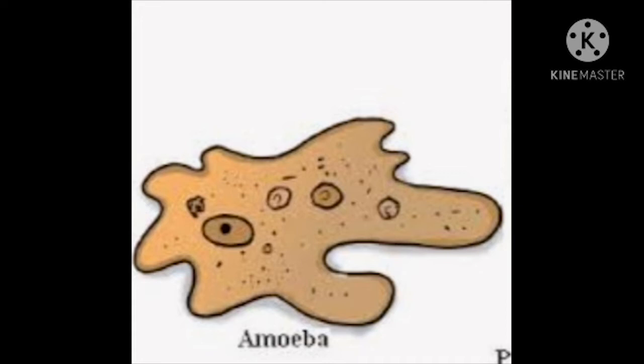How would you define the shape of amoeba? You may say the shape appears irregular. In fact, amoeba has no definite shape unlike other organisms — it keeps on changing its shape. Observe the projections of varying length protruding out of its body. These are called pseudopodia. Pseudo means false and podia means feet. These projections appear and disappear as amoeba moves or feeds.